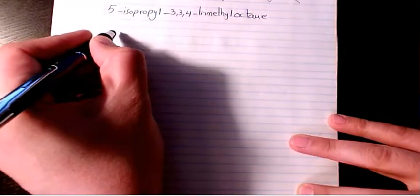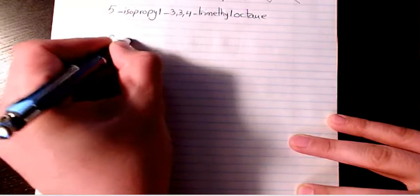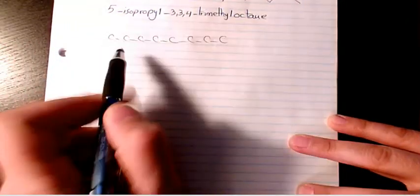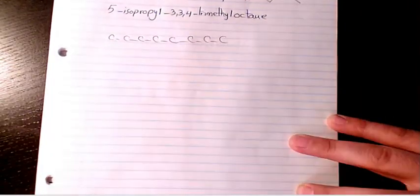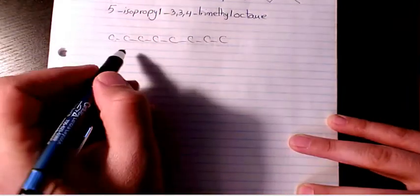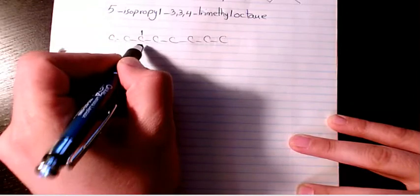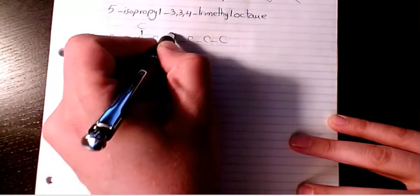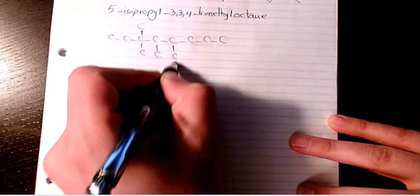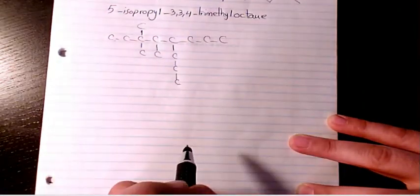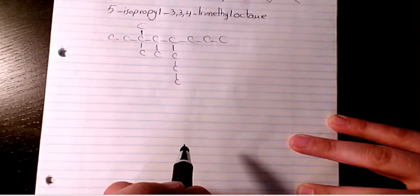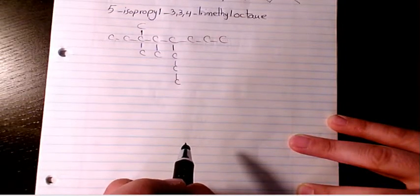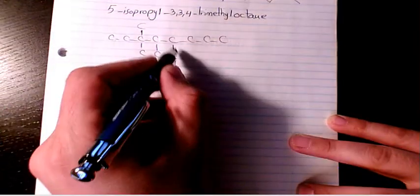So we have one, two, three, four, five, six, seven, eight carbons. And then we have substituents at positions three, three, four, and five. Position five is isopropyl.